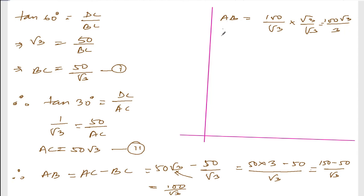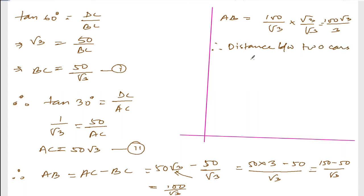AB equals 100 divided by root 3. Multiplying numerator and denominator by root 3 gives 100 root 3 divided by 3. Therefore, the distance between the two cars is 100 root 3 divided by 3 meters.